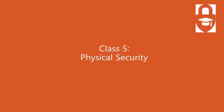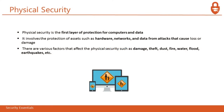Physical security — why are we talking about it here? Because it's security for your devices — we should be protecting our devices from theft, damage, and many other factors. Physical security is the first layer of protection for any computer device and its data. It involves the protection of assets such as hardware, networks, and data from attacks that cause loss or damage. Factors affecting physical security include damage, theft, dust, fire, water, floods, and earthquakes. The objective is to prevent unauthorized access to computer systems, prevent tampering or stealing of data, protect data integrity, and prevent loss against natural calamities.